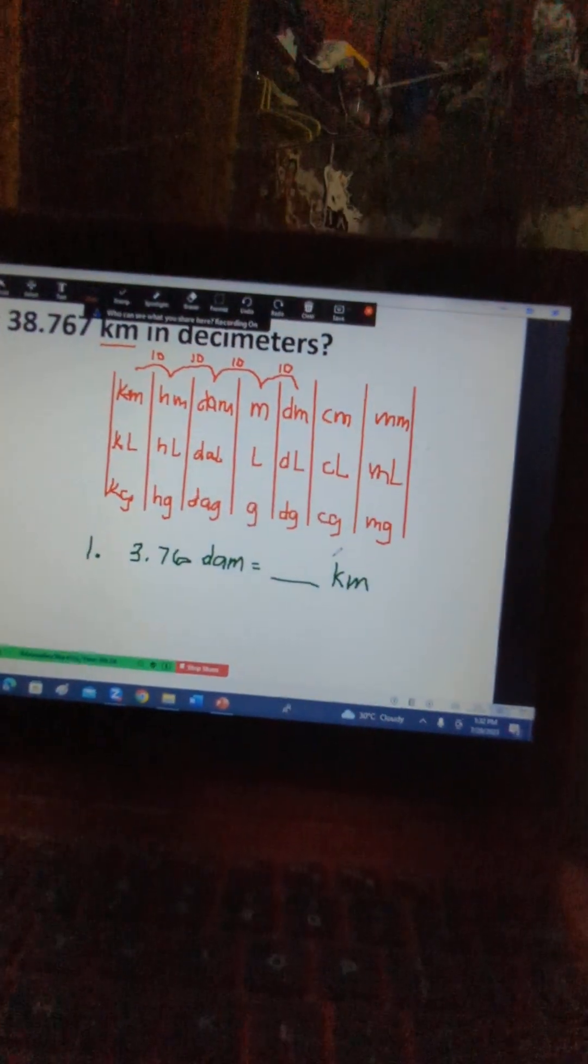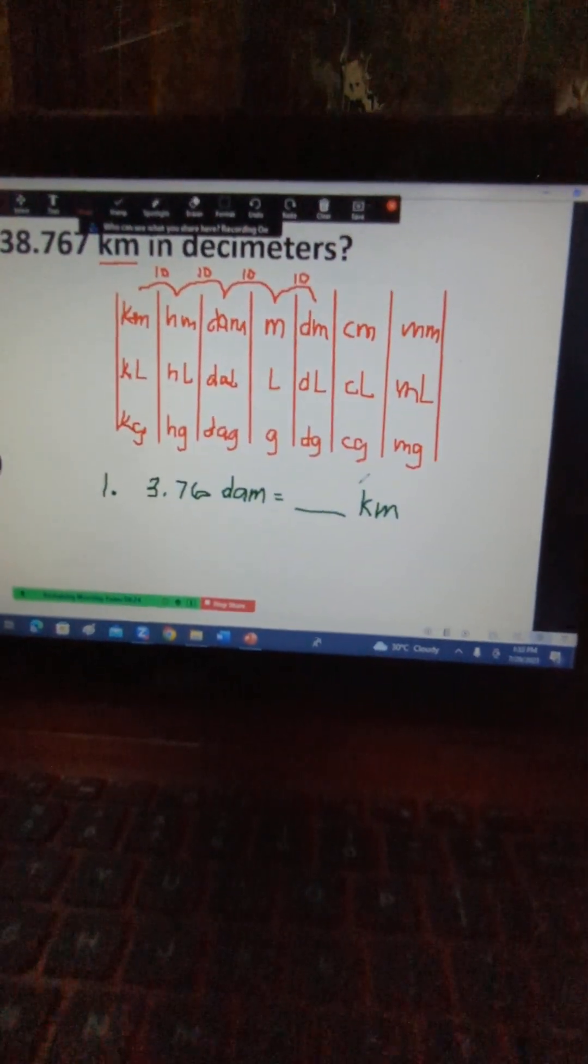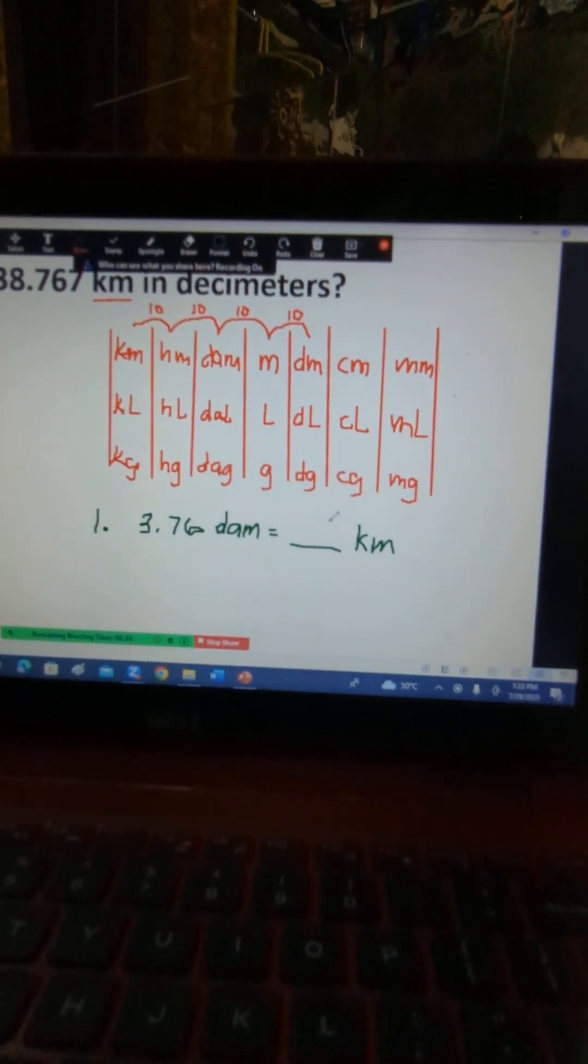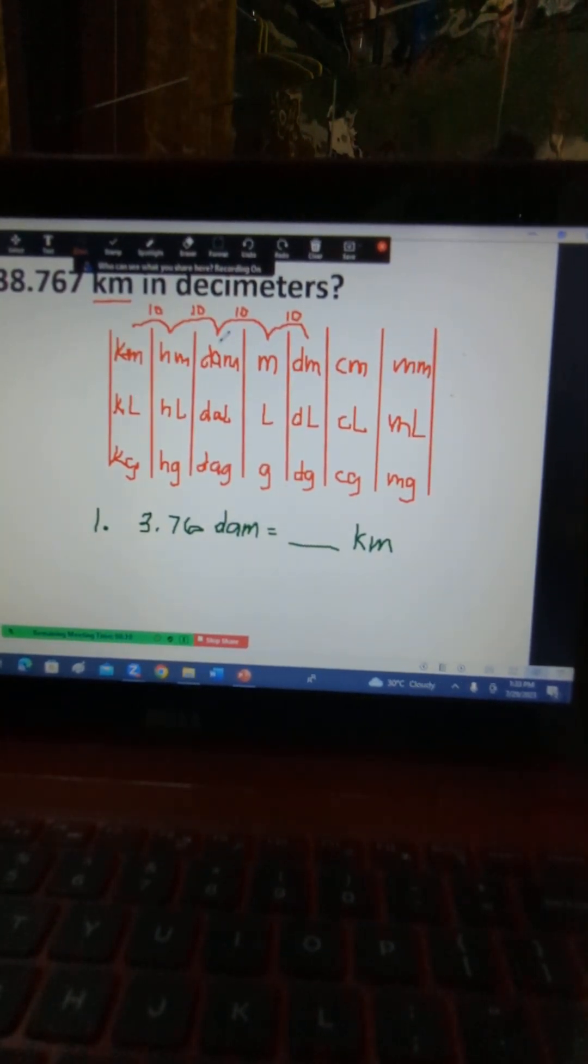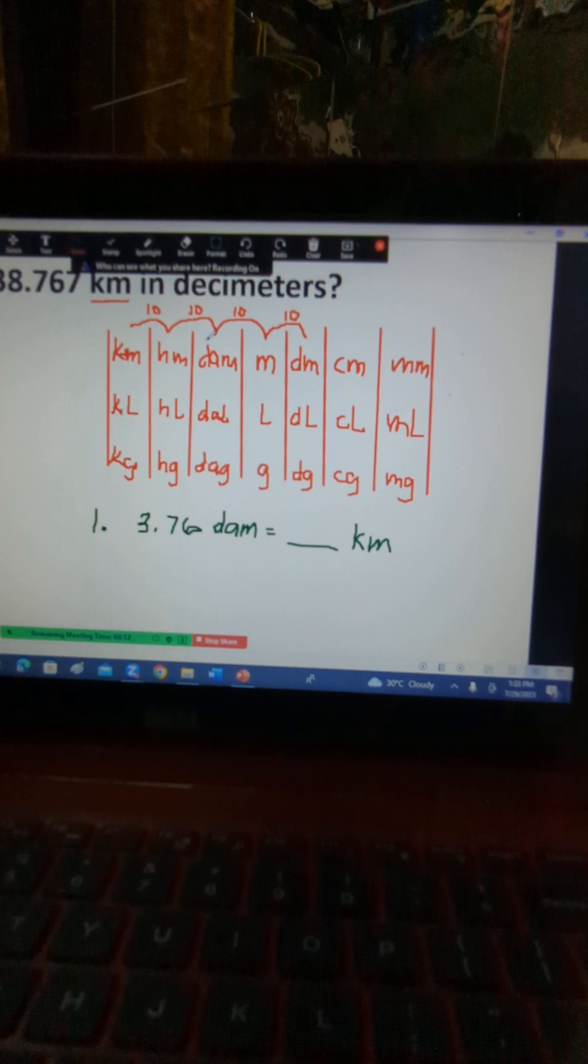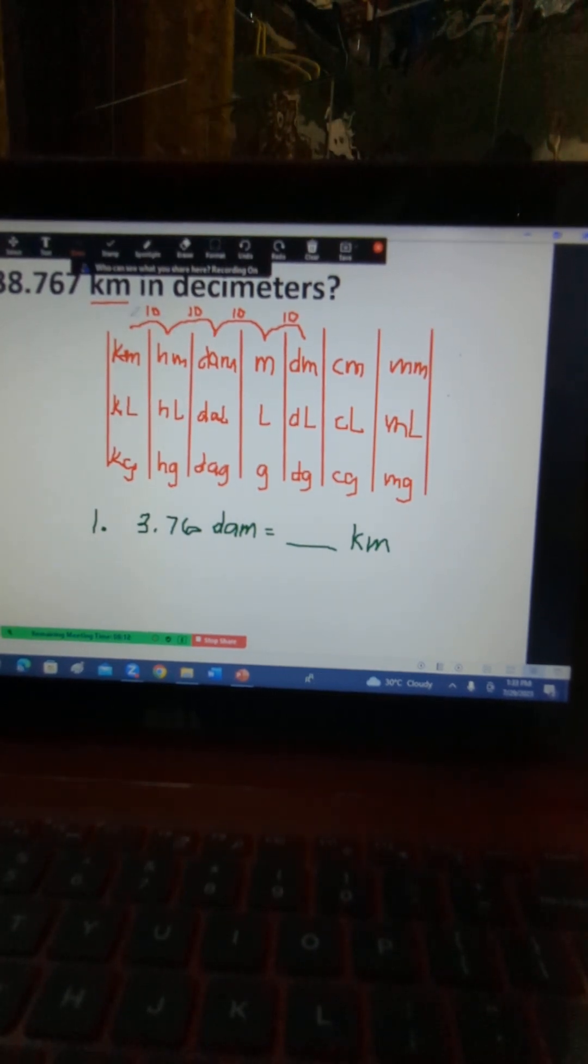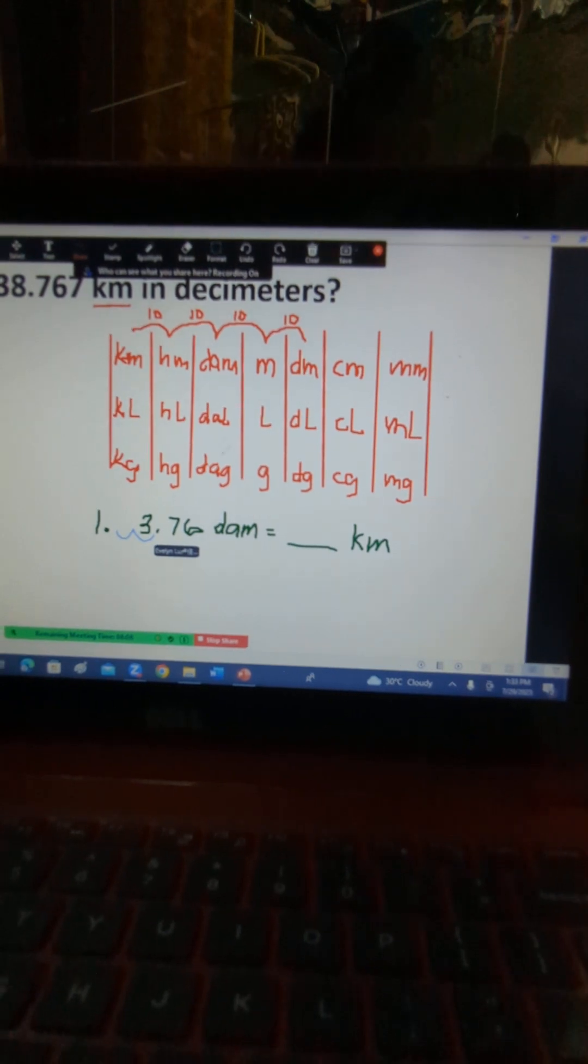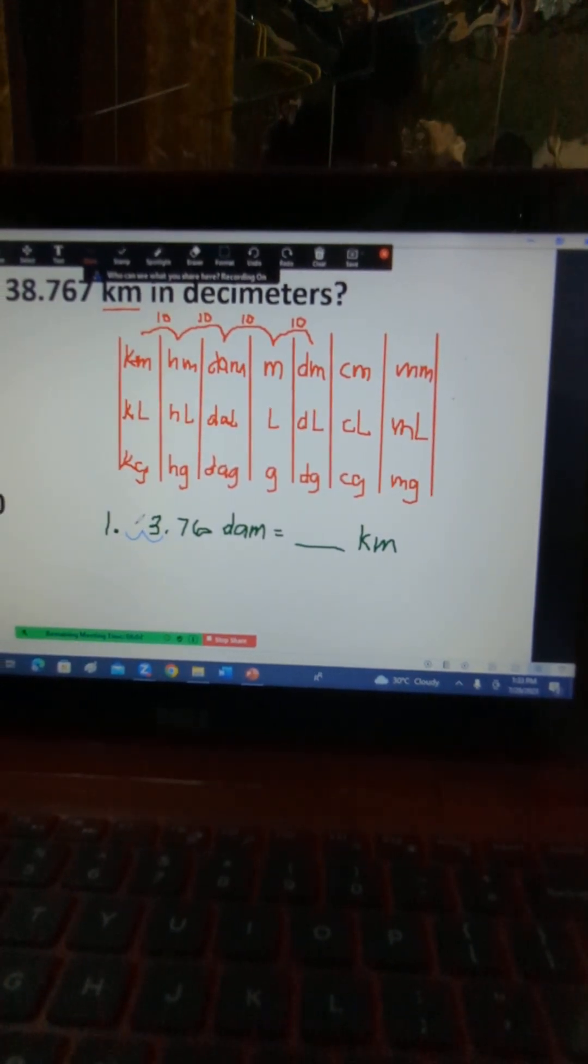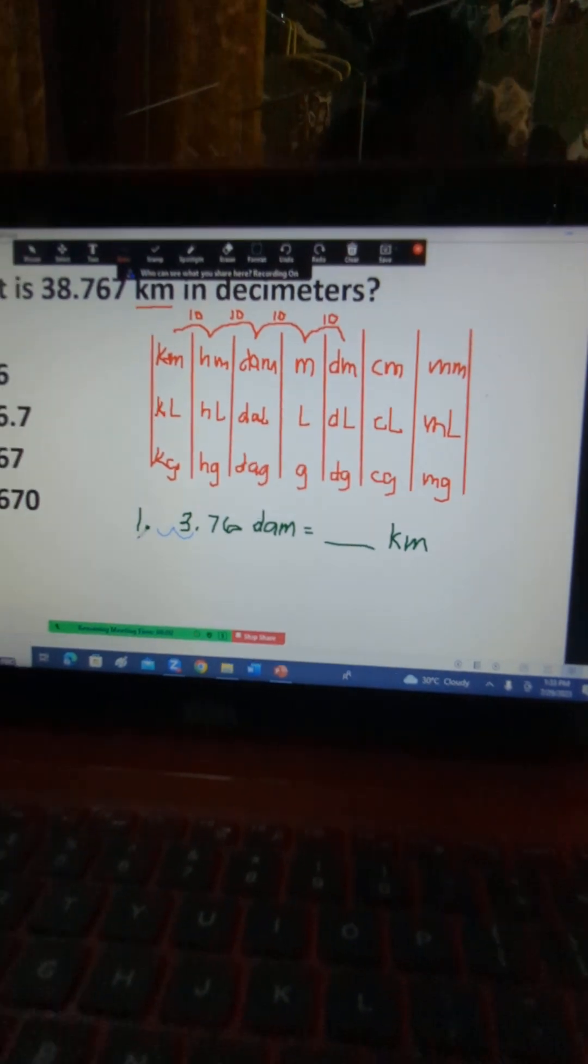Suppose you have 3.76 D.A.M. and then you are to change that into the number of kilometers. D.A.M. to kilometers. So you are moving now to the left, so there should be a movement also of the decimal point two places to the left. And so what will be the result?